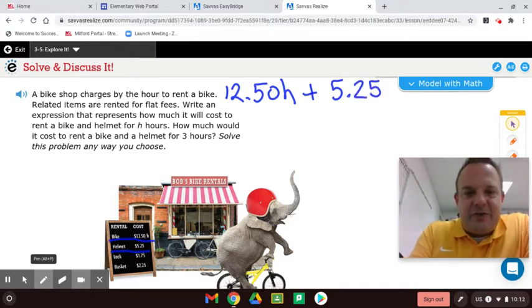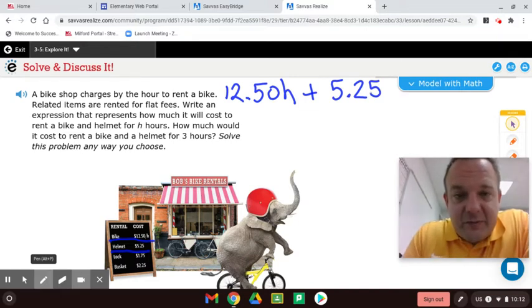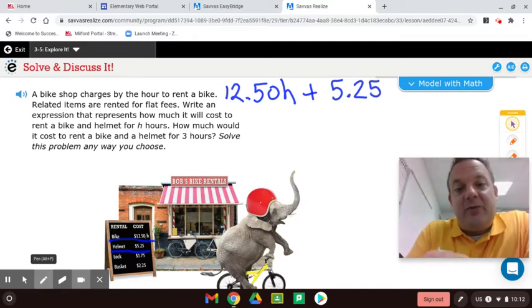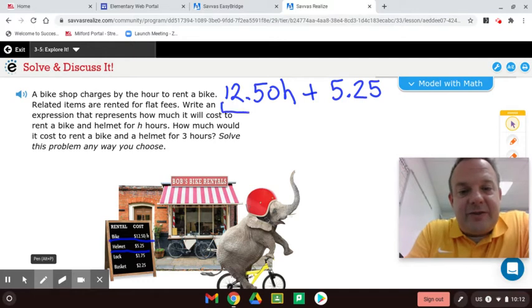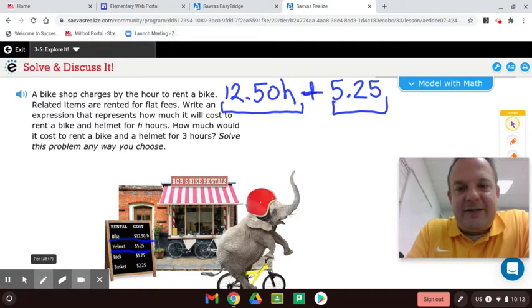Alright, you'll notice this is the sum of two terms. Terms. Now this is important from 3-4. Terms are separated by addition and subtraction. So this is one term and this is two terms. And this is the sum of two terms. Separated by addition in this case.